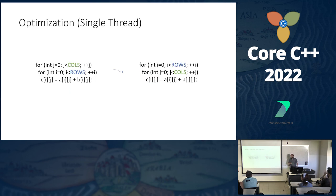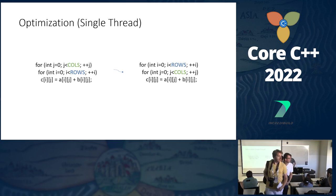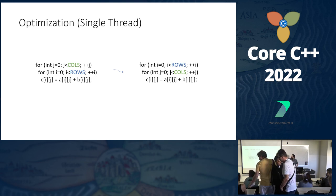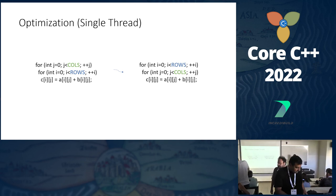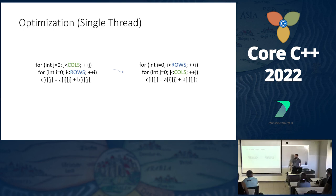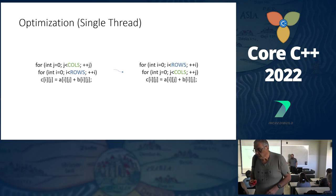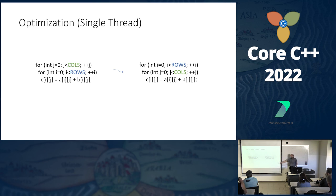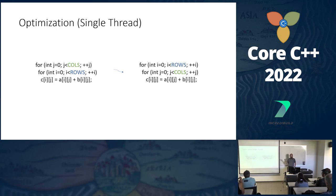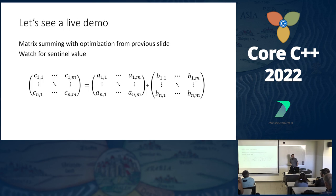Optimizations are the other reason. Consider matrix summation: A plus B equals C. We could iterate over columns then rows, or rows then columns. Mathematically these are identical, but from a memory access pattern there's a huge difference. Iterating rows then columns means sequential memory access, making better use of cache and running faster. So the compiler is allowed to reorder loops for better performance.